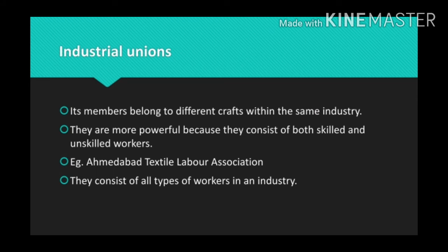Such a union cuts across skill and craft distinction of workers. It is easier for the employer to bargain with one union to cover all workers of a particular industry. Industrial unions consist of both skilled and unskilled workers. However, skilled workers may feel sidelined by unskilled workers and their specific demands may not be met.